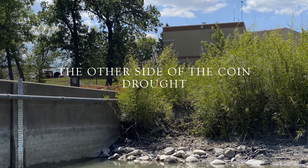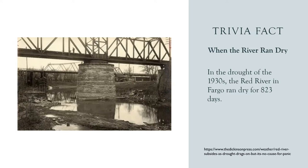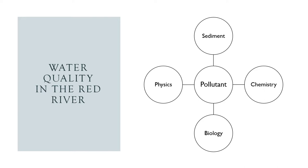While the recent history of the Red River is one of severe and damaging floods, that is not the whole story. As the river lies on the eastern edge of the Great Plains, it is also subject to droughty conditions that lower water levels and reduce flows. In recorded history, the Red River ran dry for not insignificant periods of time. In the 1930s, the Red River had no flow for 823 days in the Fargo area.